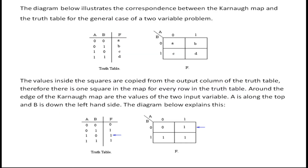The diagram below illustrates the correspondence between the K-map and the truth table for the general case of a 2-variable problem. Here we are showing the truth table representation in a K-map. We have 2 variables A and B, and the output column F. We can find the different values A, B, C, D represented in the cells or square blocks of the 2-variable K-map.